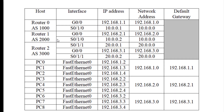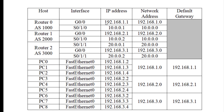This is the IP configuration. Router 0 is AS 1000 with two interfaces. For G0/0 we are using IP address 192.168.1.1. There is a serial interface between router 0 and router 1 — 10.0.0.1 and 10.0.0.2. This is the topology; you will configure the network with these IP addresses. Let us now configure using the Cisco Packet Tracer.